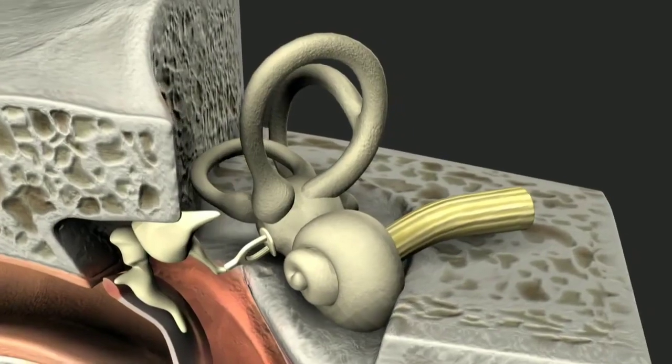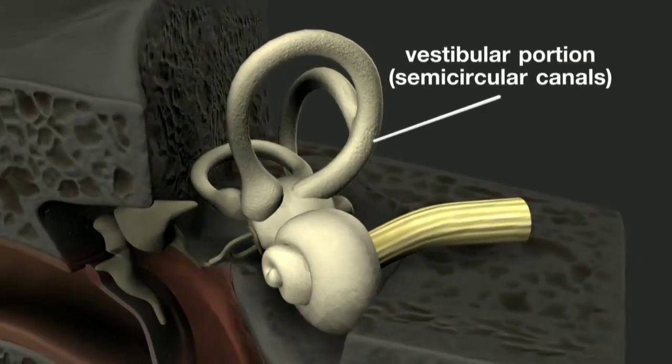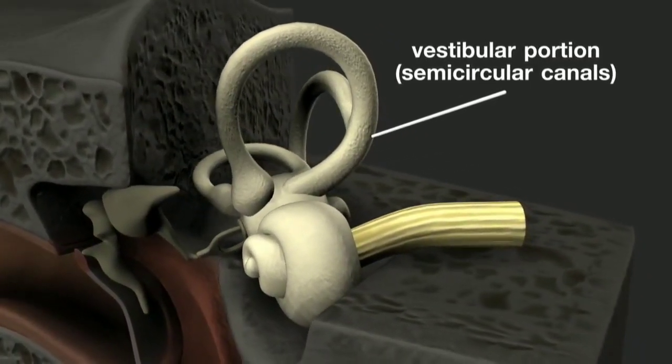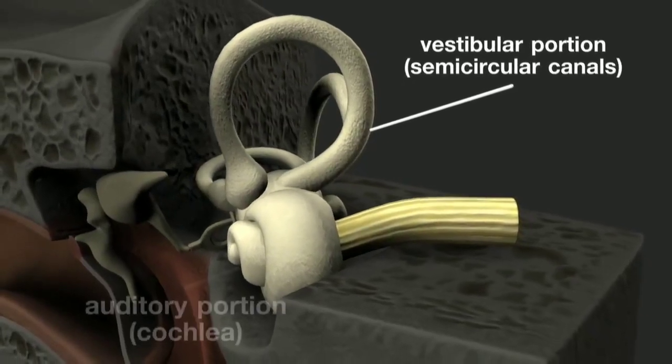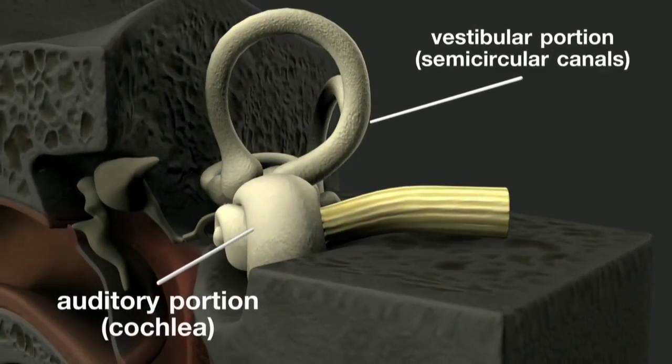The inner ear has two distinct portions: the vestibular portion, concerned with balance, and the auditory portion, the cochlea, which is concerned with hearing.